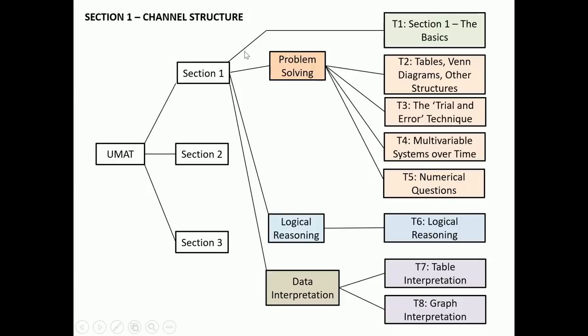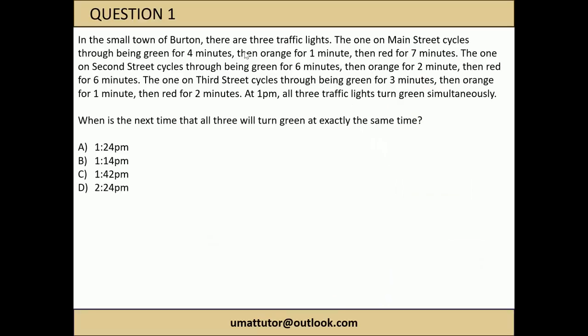I'm going to get straight into it with a question. We're dealing with a small town with 3 traffic lights, and each of these 3 traffic lights has a different amount of time for each colour. They cycle through green, orange, red and then back to green, but each traffic light does so in a different period of time. At 1pm all 3 traffic lights turn green at the same time, and the question is when is the next time that this will happen again. This illustrates what I mean by multivariable systems over time - the multivariable bit is the 3 different traffic lights, and the over time bit is how they change in different periods.